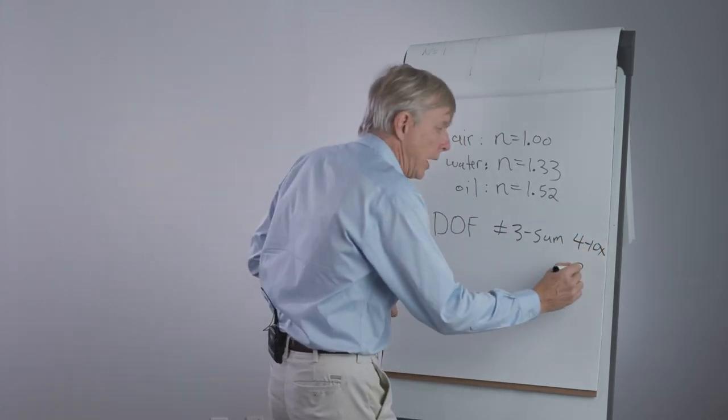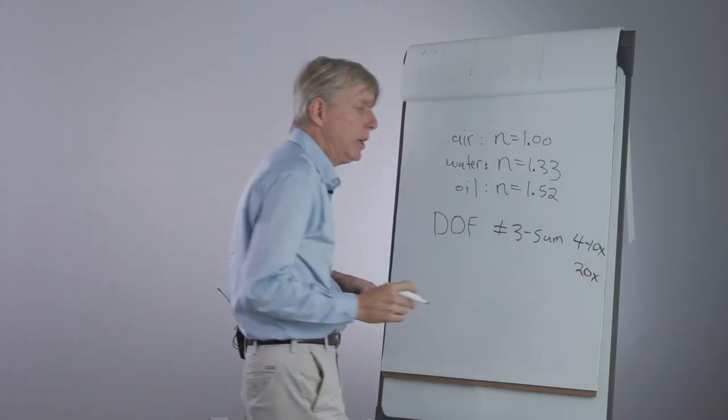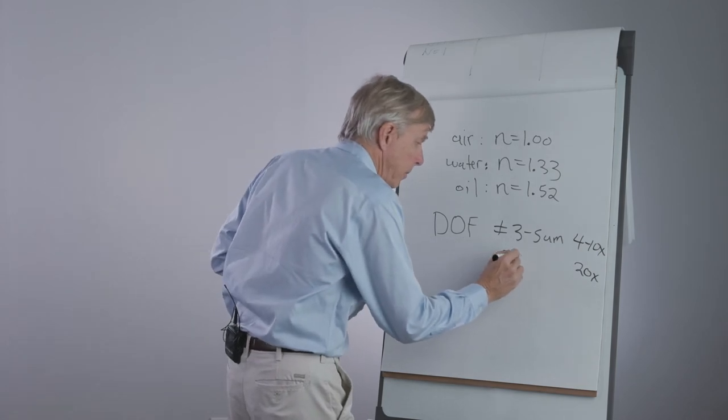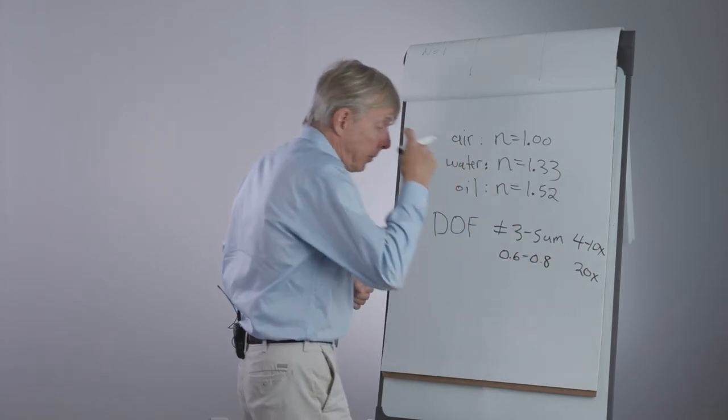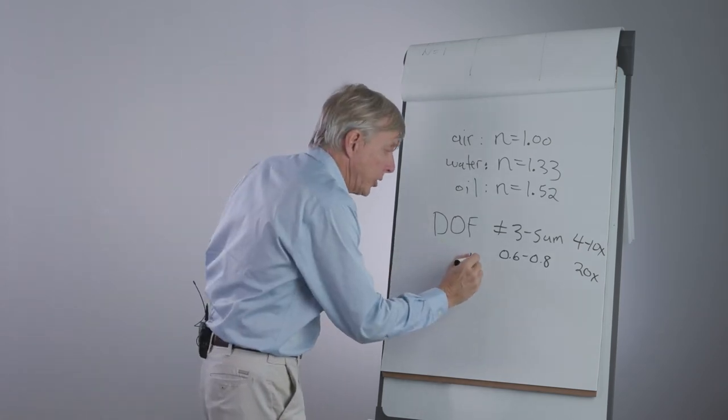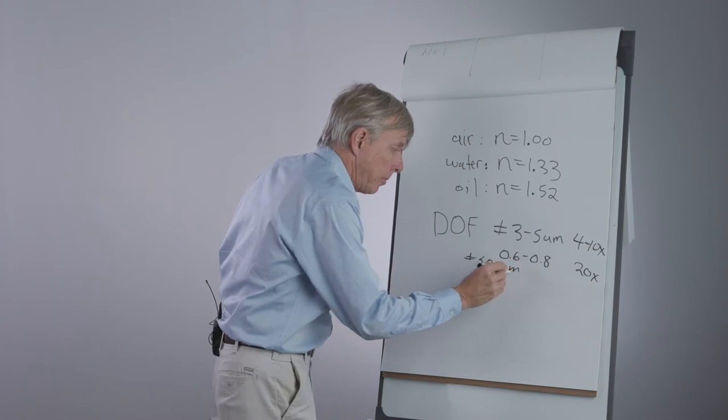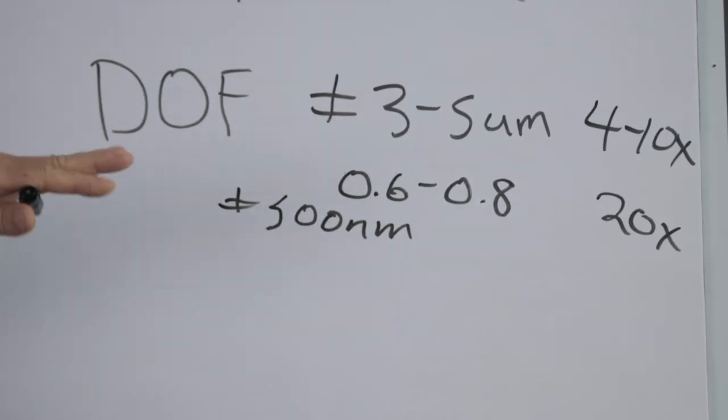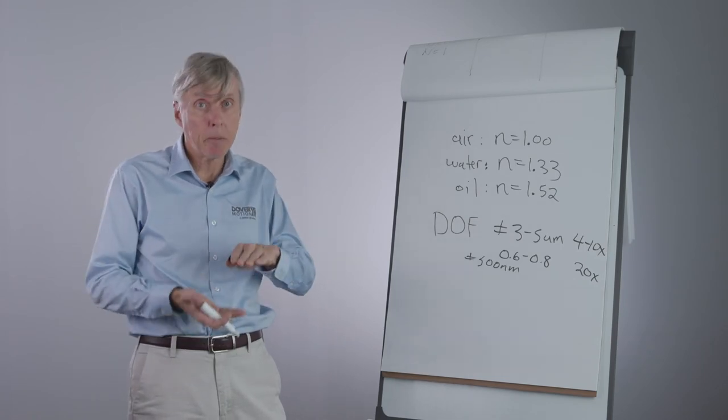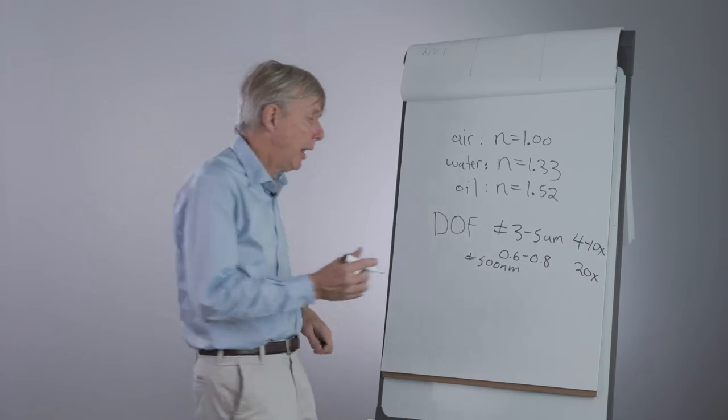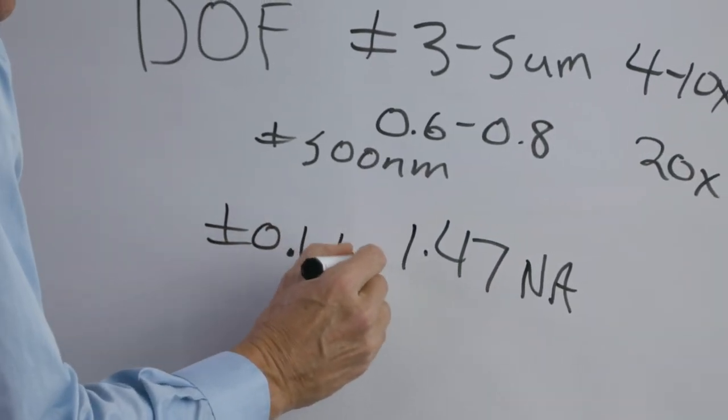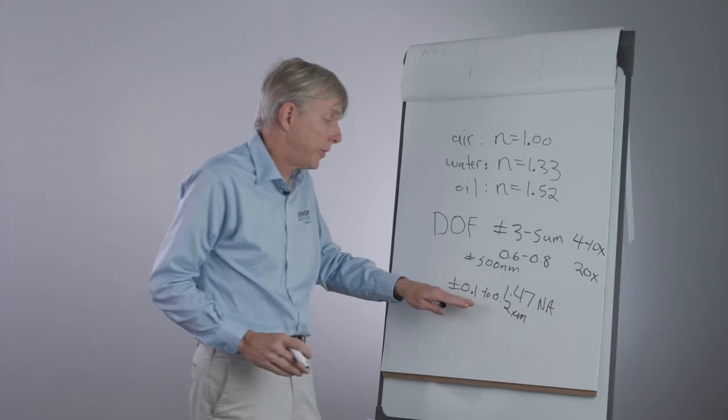If we look at a 20x, which can be numerical aperture of, say, 0.6 to 0.8, the depth of field now drops, and it could be on the order of plus or minus 500 nanometers. As we move into high magnification with oil immersion at a numerical aperture of 1.47, the depth of field drops very dramatically, and the depth of field could be plus or minus 0.1 to 0.2 microns. That's a very tight tolerance.